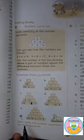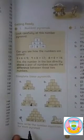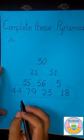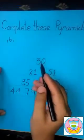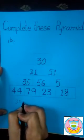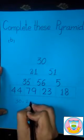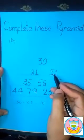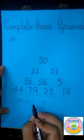Our next part is: write the number equations of each pyramid. We solve pyramid B. Now we write the number equations. First, we add 30 with 21. Our first equation is 30 plus 21, and we get the answer of 51. When we add 30 with 21, we get the answer 51. This is our first equation.